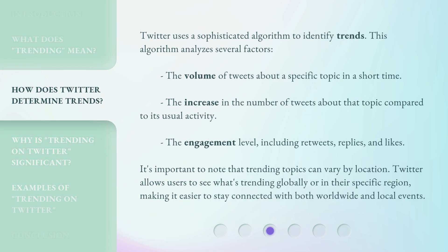Twitter uses a sophisticated algorithm to identify trends. This algorithm analyzes several factors: the volume of tweets about a specific topic in a short time, the increase in the number of tweets about that topic compared to its usual activity, and the engagement level, including retweets, replies, and likes. It's important to note that trending topics can vary by location. Twitter allows users to see what's trending globally or in their specific region, making it easier to stay connected with both worldwide and local events.